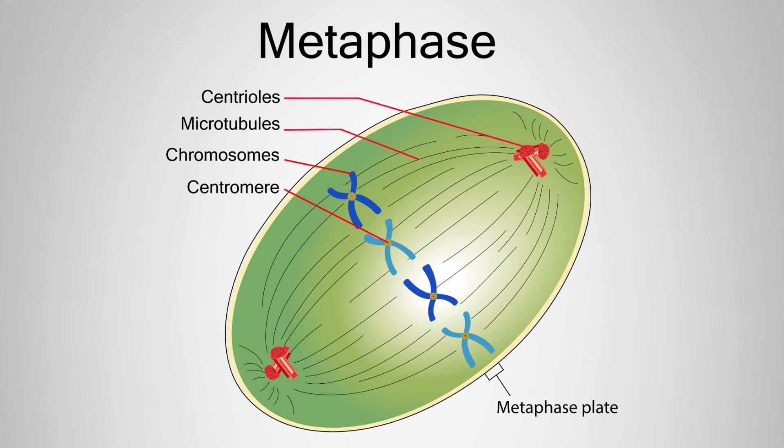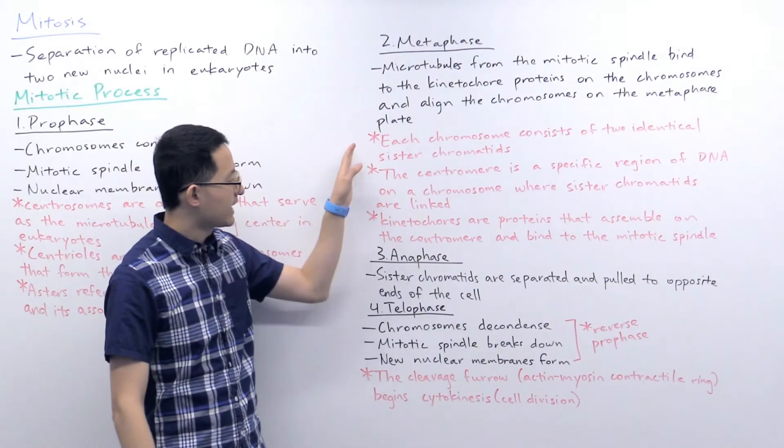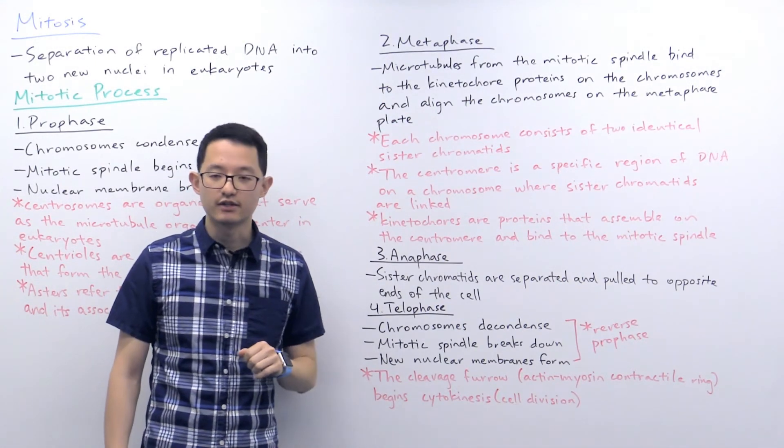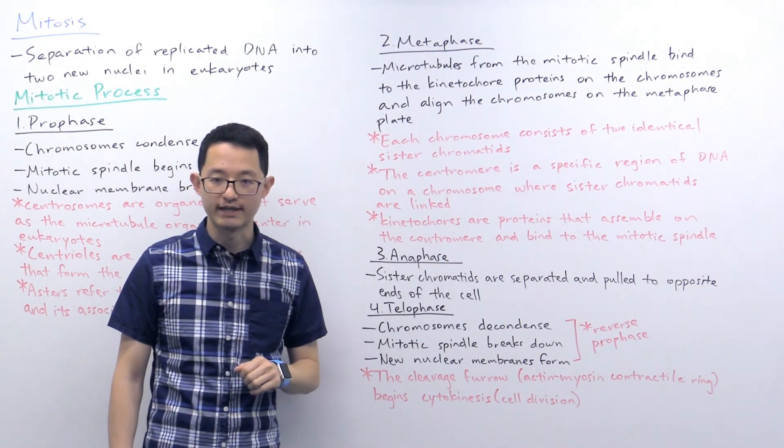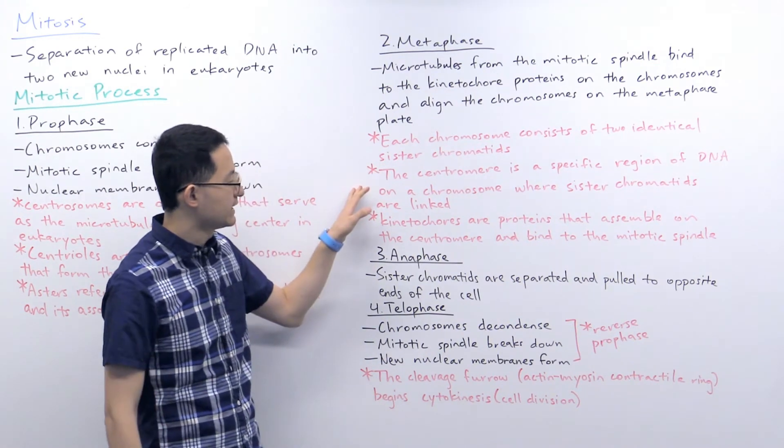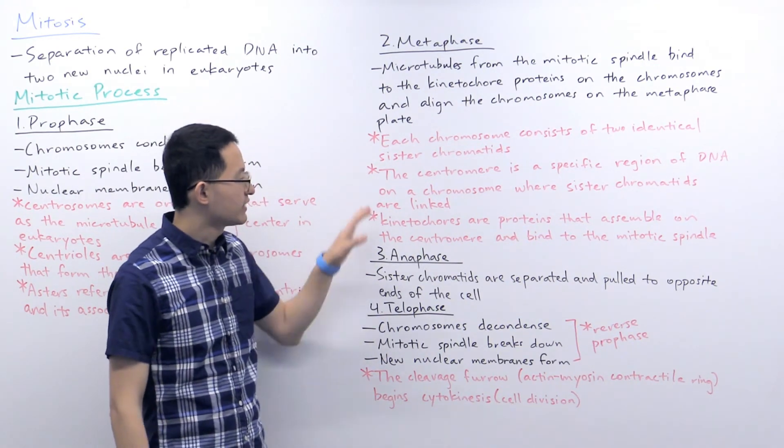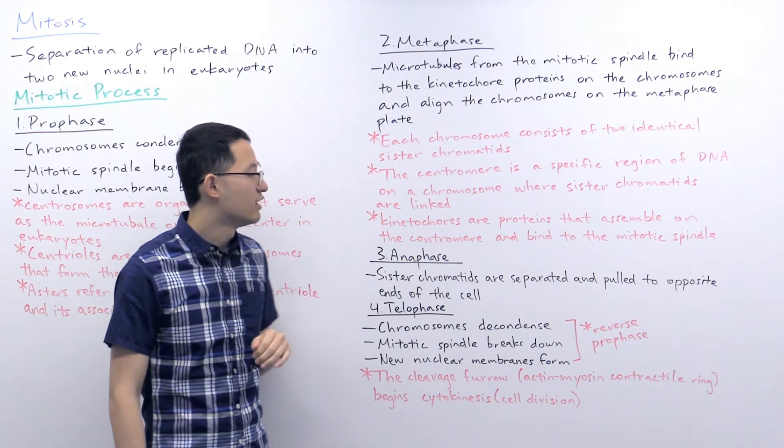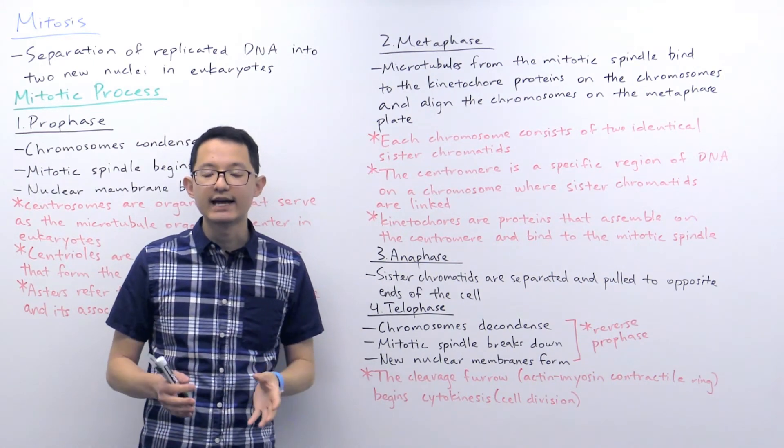Several key terms here. First of all, each chromosome consists of two identical sister chromatids, and that's because mitosis occurs after DNA replication. Second, the centromere is a specific region of DNA on a chromosome where sister chromatids are linked.